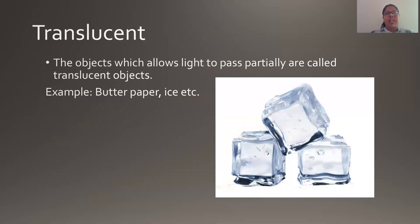Next, translucent objects. These objects will not allow the light to pass completely, but only some amount of light will pass through. These are termed as translucent objects. The examples of translucent objects are butter paper, ice, etc. To study if an object is translucent, take an ice cube and turn on the flashlight of your mobile and try to pass it through the ice cube. Unlike the glass, where all the light passed easily, when you take the ice cube, all the light does not pass through easily — only a partial amount of light passes through. That is why these substances are known as translucent objects.